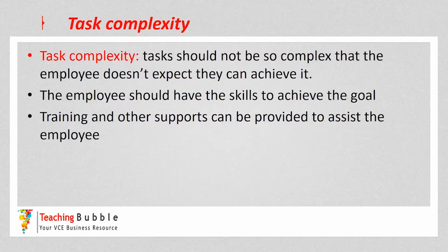The final attribute is task complexity. While more challenging goals provide more motivation, Lock and Latham also found that tasks should not be so complex that the employee doesn't believe they can achieve them. If tasks are so complex that the employee lacks the skills or knowledge to achieve the goal, it won't only fail to motivate — it can actually hurt motivation. If the employee doesn't have the skills, training or other support should be provided so they can work towards that goal, contributing to motivation and achieving the challenging goal.